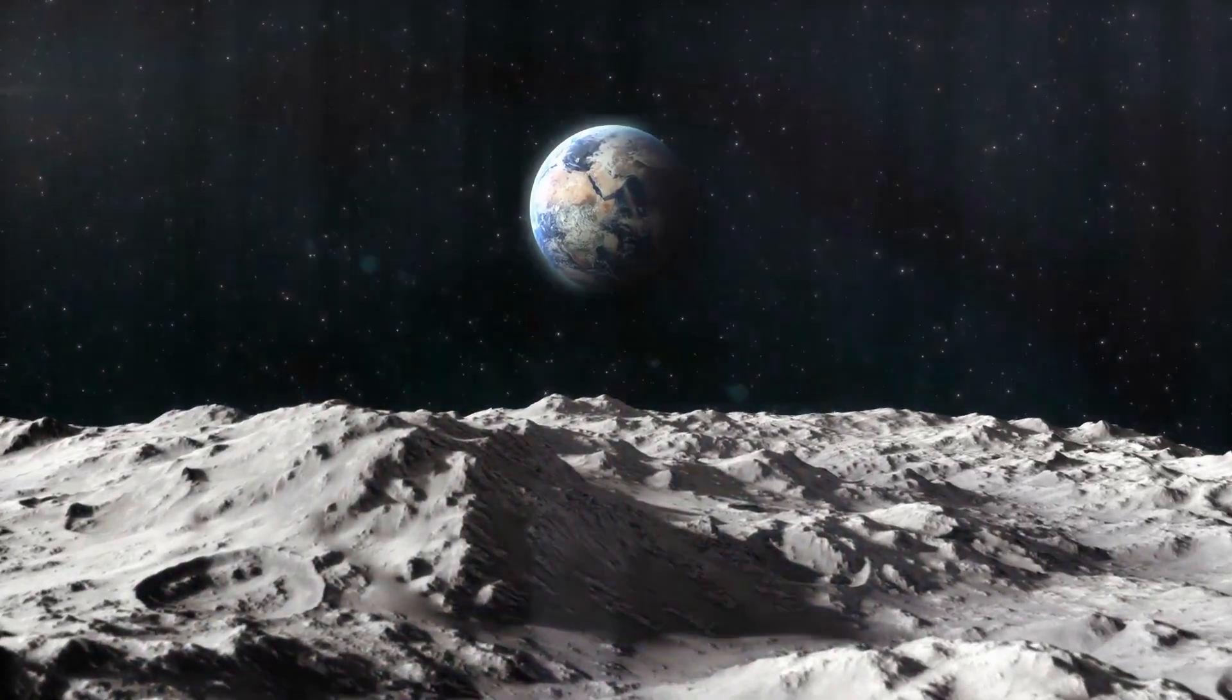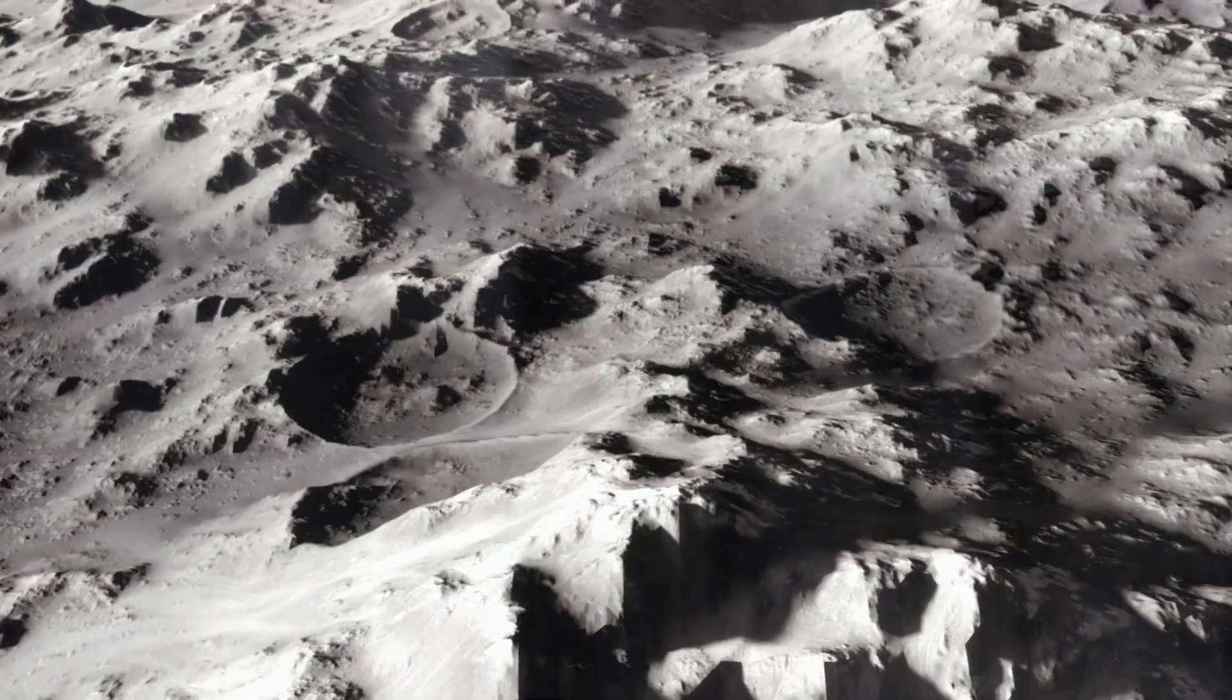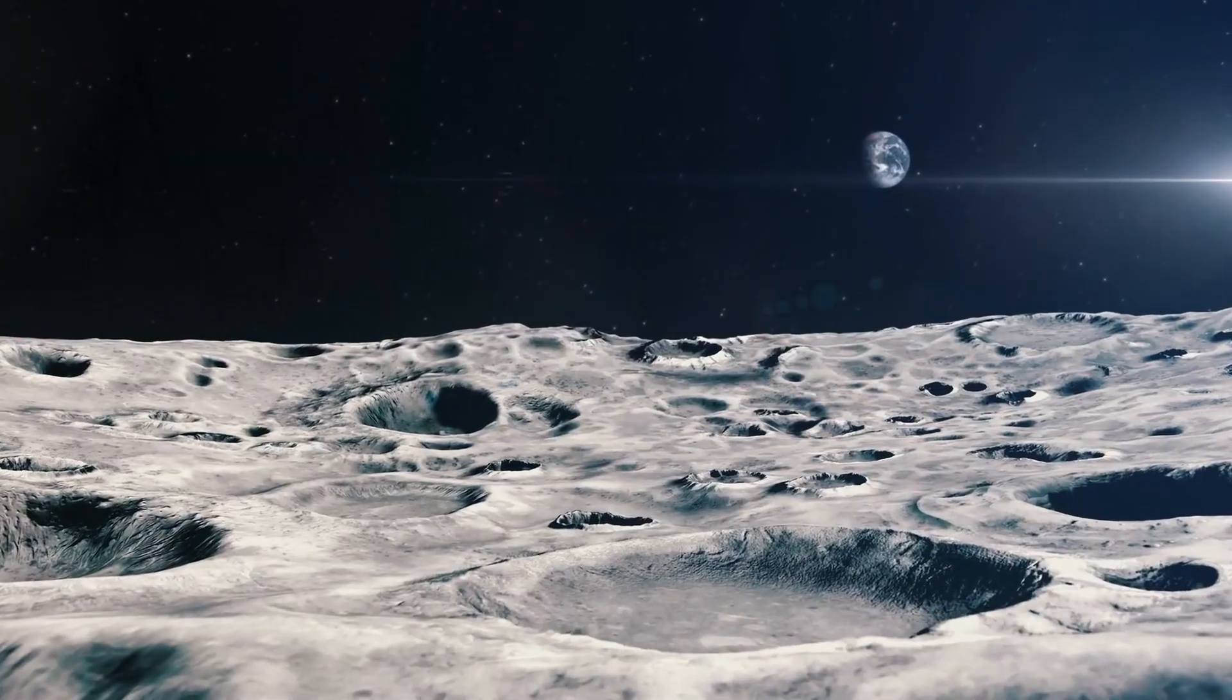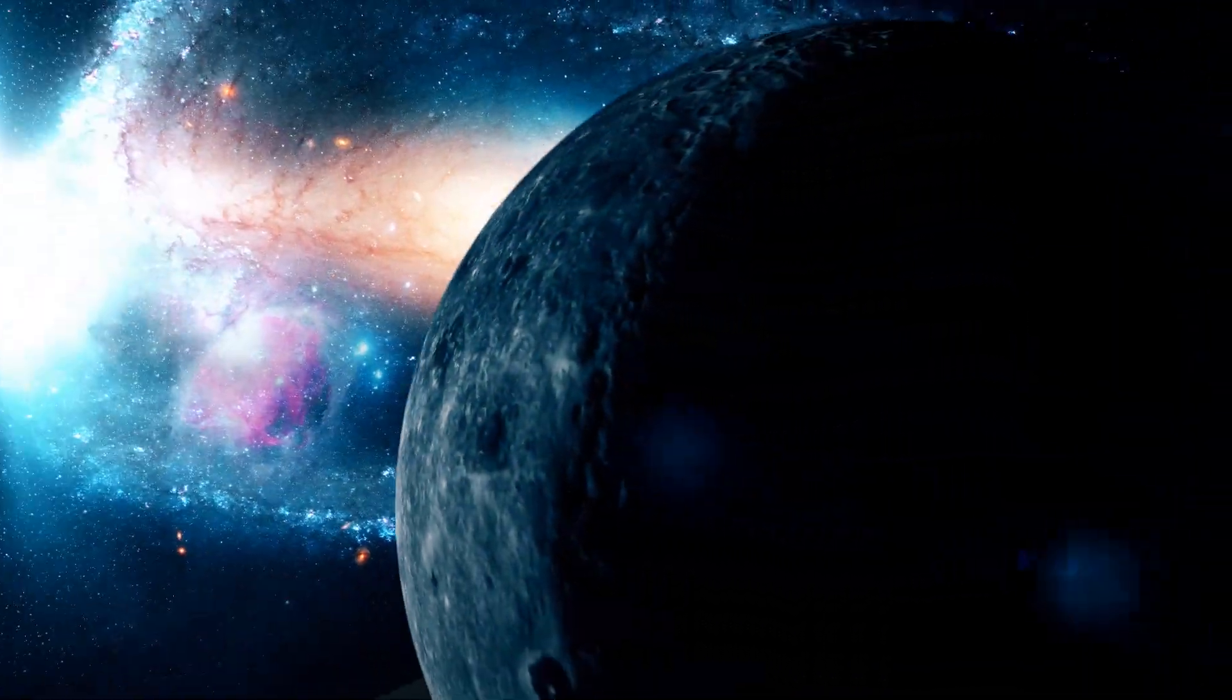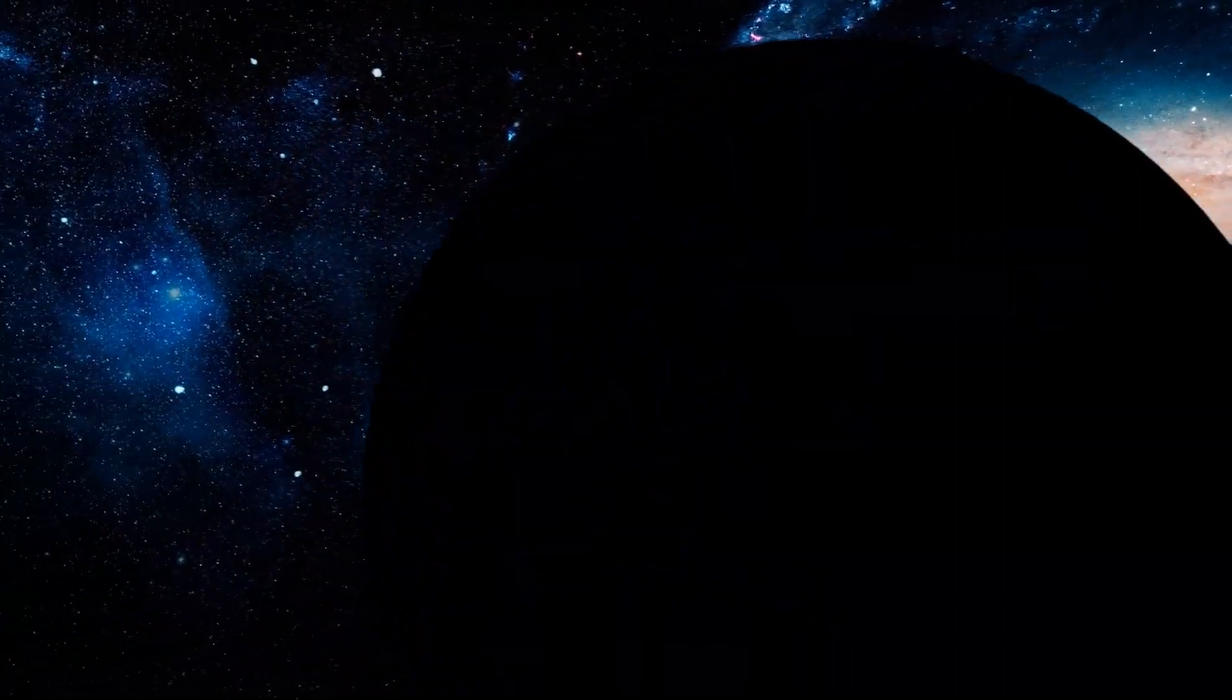The moon has no atmosphere, no water, and no life, but its gravitational pull affects the tides and stabilizes the Earth's rotation. It's also the brightest and most easily observable celestial object in the night sky.